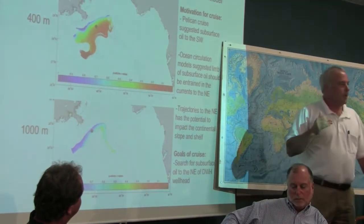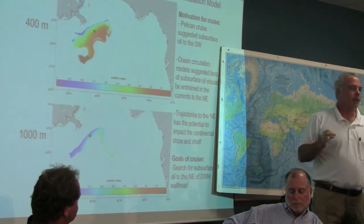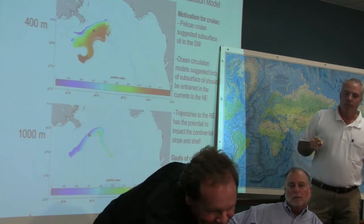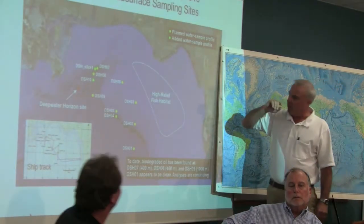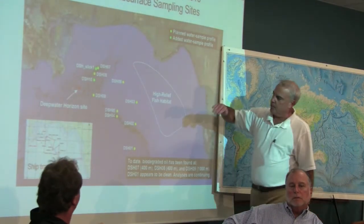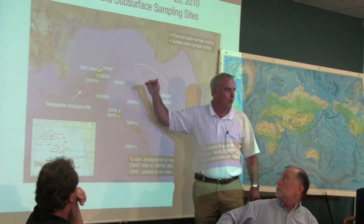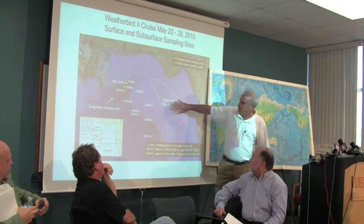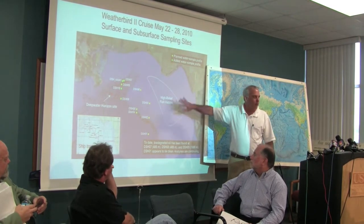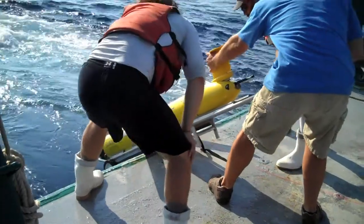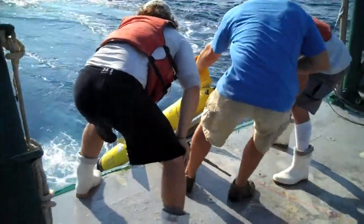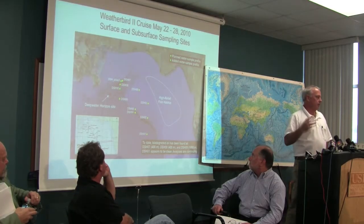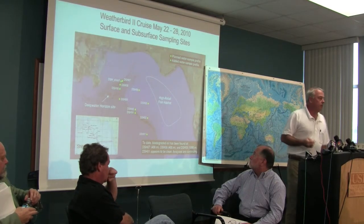So when it came time for us to design the cruises, we were very concerned about these depth contours, especially in this case we picked the 400 and 1,000 meter contours. We have a series of locations that we sampled that we refer to as stations, and each of these involved the collection of water samples from different depths.